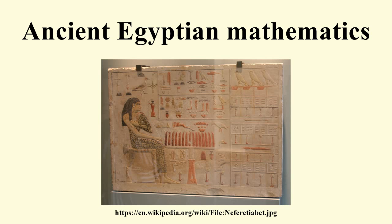A more complicated example of the division algorithm is provided by problem 66: a total of 3,200 ro of fat are to be distributed evenly over 365 days. First the scribe would double 365 repeatedly until the largest possible multiple of 365 is reached which is smaller than 3,200. In this case, 8 times 365 is 2,920, and further addition of multiples of 365 would clearly give a value greater than 3,200. Next it is noted that a fractional multiple of 365 gives the remaining value of 280 needed, yielding the final answer for 3,200 divided by 365.